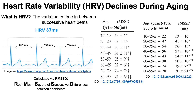These data were confirmed in another study of 344 subjects. Again, starting at 53 milliseconds in young subjects, declining all the way to 19 milliseconds in 70–79-year-olds. Notably, the 80–99-year-olds actually showed an increase back to 30 milliseconds. The authors proposed the idea that having a higher heart rate variability than your age group may be a promoter of longevity.